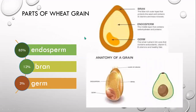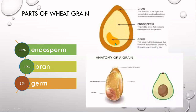The three parts of the wheat grain are: endosperm, which makes up 85 percent; bran, which is 12 percent; and the germ, which is 3 percent. The bran is the outer layer that contains B vitamins and trace minerals. The endosperm is the middle layer containing carbohydrates and proteins. The germ contains healthy fats and much nutrition.